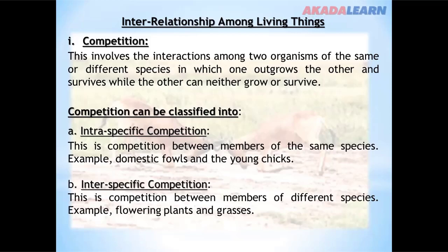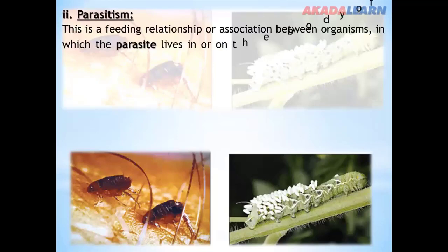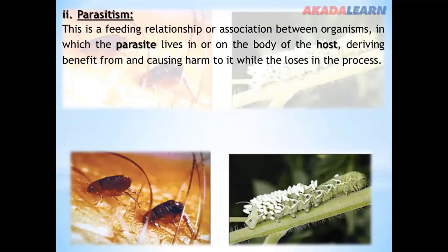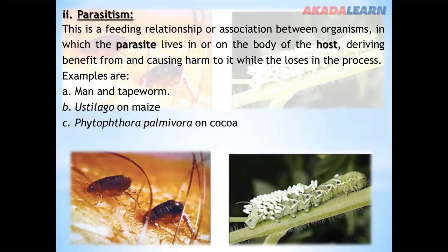The next interrelationship is parasitism. This is the feeding relationship or association between organisms in which the parasite lives in or on the body of the host, deriving benefit from and causing harm to the host, while the host loses in the process. Examples include: Antestiopsis on maize, Phytophthora palmivora on cocoa, and Alternaria on tomato.